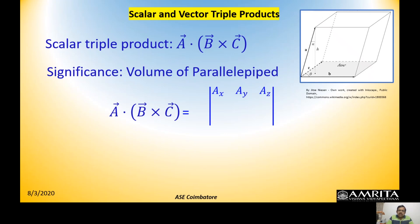The 3×3 determinant has first row [Ax, Ay, Az], second row [Bx, By, Bz], and third row [Cx, Cy, Cz]. To expand: take the first component Ax, leave its column and top row, and the remaining 2×2 block gives [By, Bz; Cy, Cz], which you cross-multiply. I am sure you are familiar with this process from the last class.